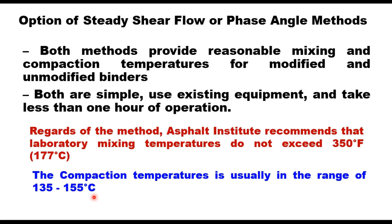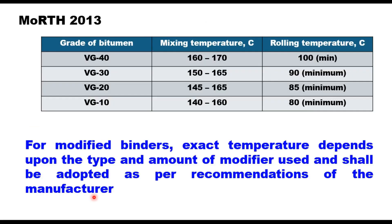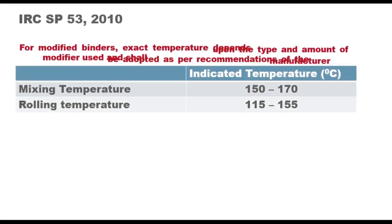For binders modified with ground tire rubber, it is proposed to use supplier recommendations to determine appropriate mixing and compaction temperature. The Ministry of Road Transport and Highways specification 2013 suggests mixing temperature and rolling temperature for different grades of unmodified binders: mixing temperature from 140°C to 170°C depending upon the grade of binder, and compaction temperatures where only a minimum temperature is given — if temperature falls below these limits, compaction will not be possible. For modified binders, the exact temperature depends upon the type and amount of modifier used and shall be adopted per manufacturer recommendations.